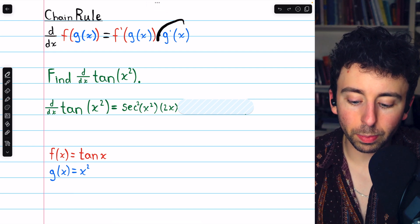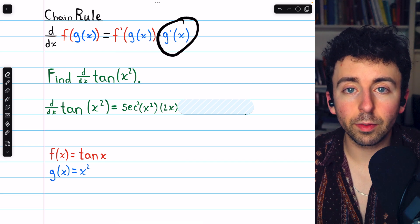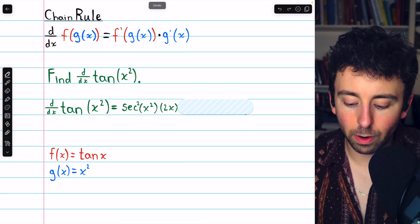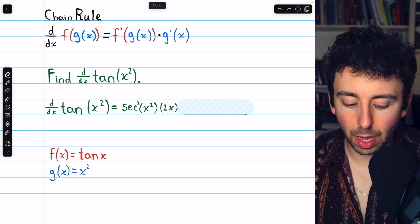But then we do need to multiply by the inside function's derivative, times g prime. The derivative of the inside function x squared is 2x, so we multiply by 2x.